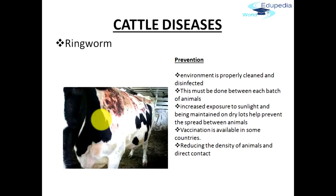Generally, because it is transferable, the animals which are infected should be kept away from the other animals. Vaccination is also available in some countries, which can be given to these cattle in order to prevent them from getting affected by ringworm, and reducing the density of animals in direct contact. So these are a few steps that can be taken in order to prevent this disease.